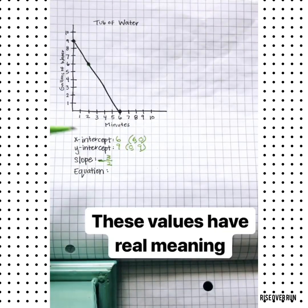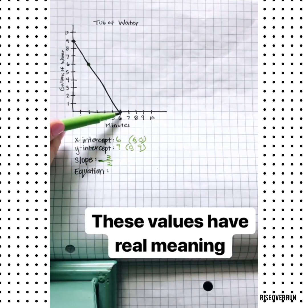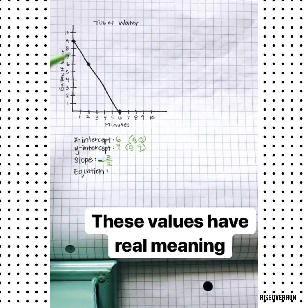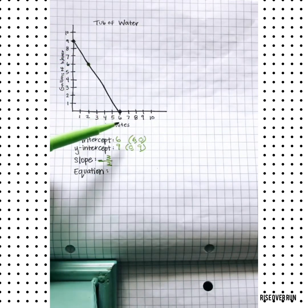So now let's make sure we know what these numbers mean. This graph is about a tub of water, over here we have gallons, and here we have minutes. So this x-intercept of 6, that's 6 minutes, and according to this graph there will be 0 gallons of water after 6 minutes.